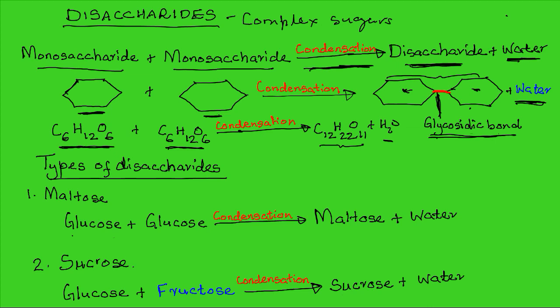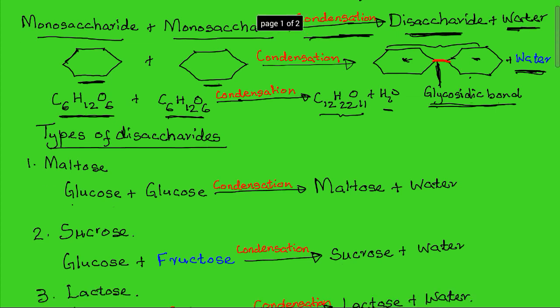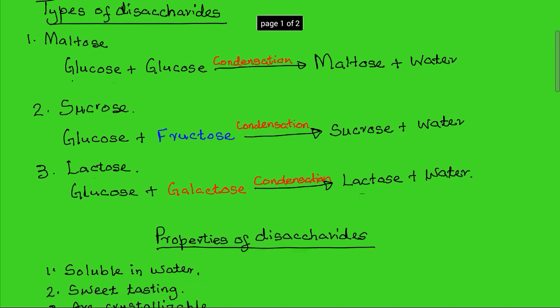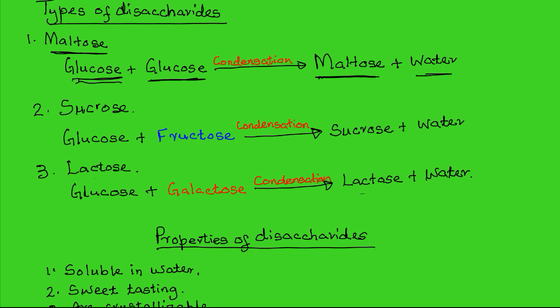The type of disaccharide depends on the nature of the monosaccharides that go into condensation. There are three common disaccharides in nature. The first is maltose sugar, which is formed from the condensation of two glucose molecules, producing maltose and a water molecule.